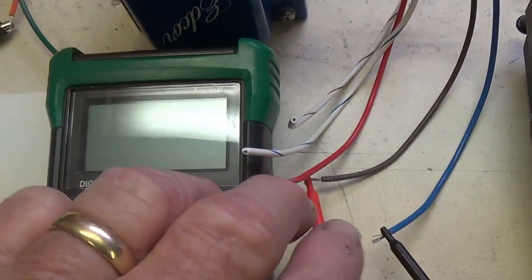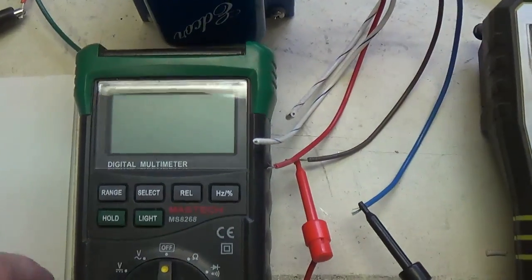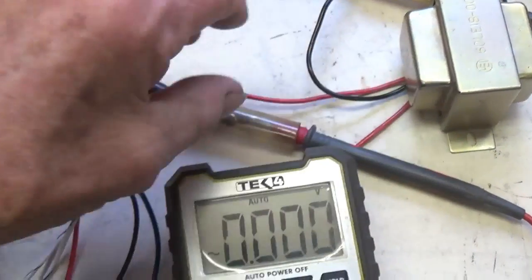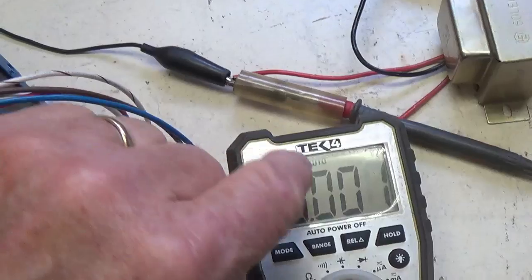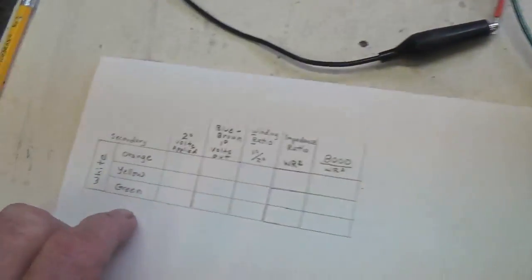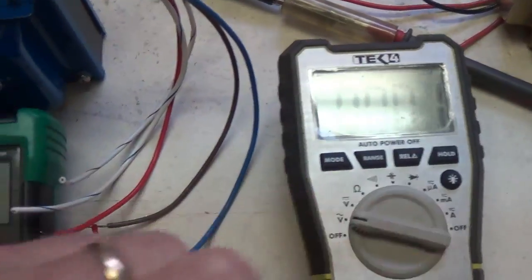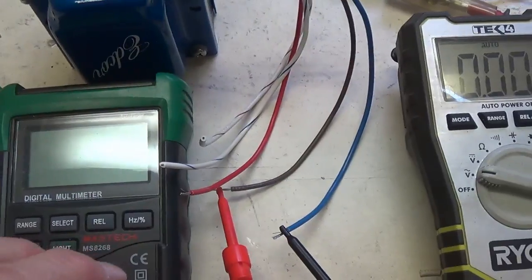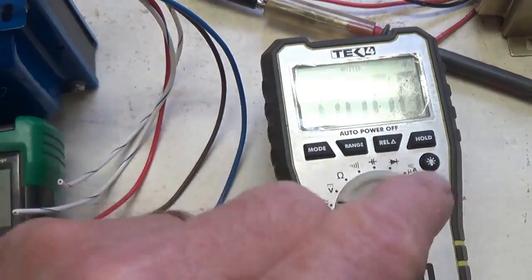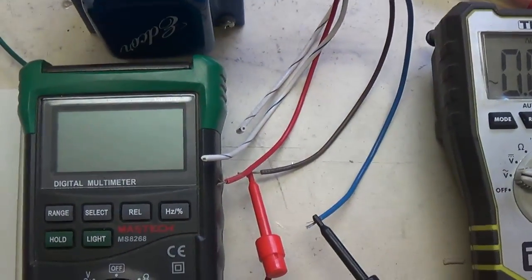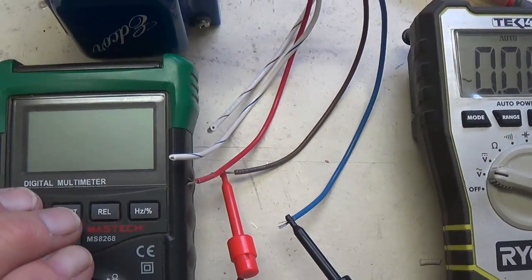If you don't have two separate digital multimeters, then hook up your single one to the output of the transformer to find out what your output voltage is. It'll be around 6 some odd, 6.1 or 2 volts, something like that. And you can write it down in your chart and then disconnect it and hook it up here to the primary output. So you can do this with a single multimeter, but you will have to hook it up here, disconnect it and then hook it up here.